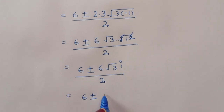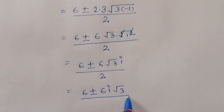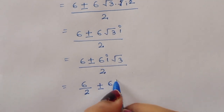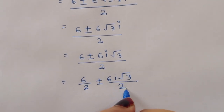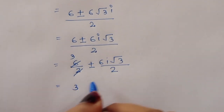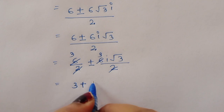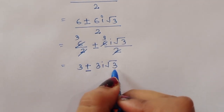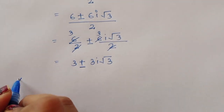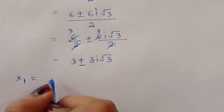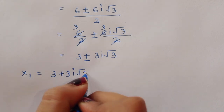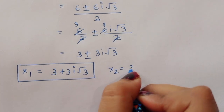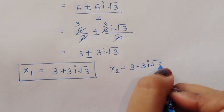Dividing through by 2: x equals 3 plus or minus 3i square root of 3. Therefore x1 equals 3 plus 3i square root of 3, and x2 equals 3 minus 3i square root of 3.